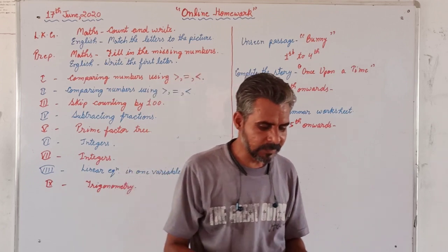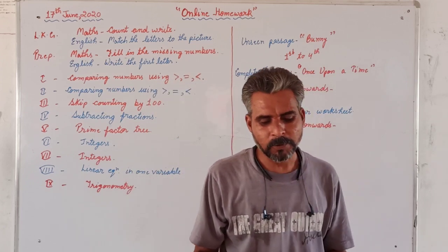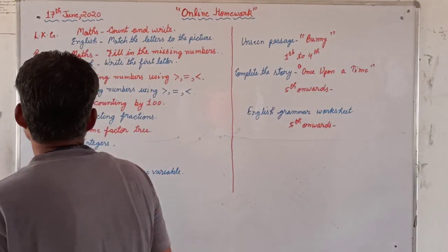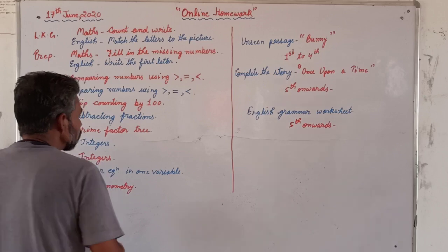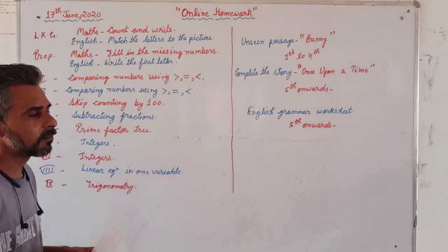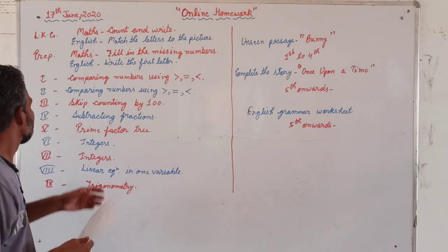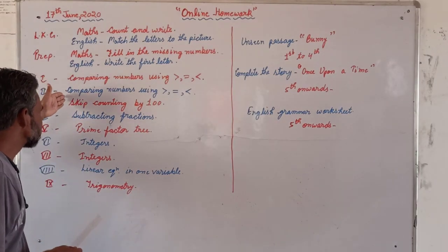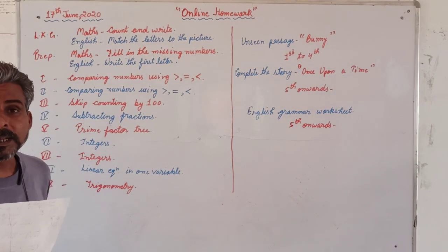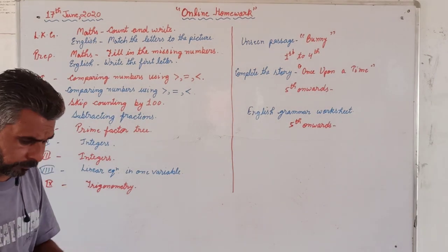For first class and second class, they are provided a double sheet on comparing numbers, meaning less than, greater than, and equals to. For first class and second class the topic is the same, but the double sheets are different.